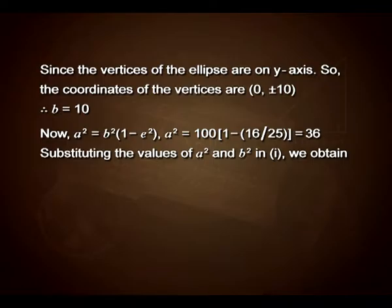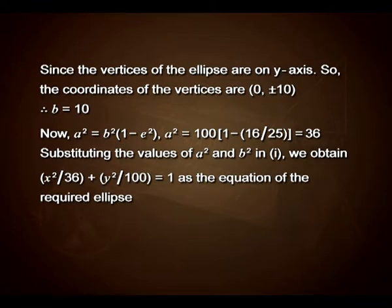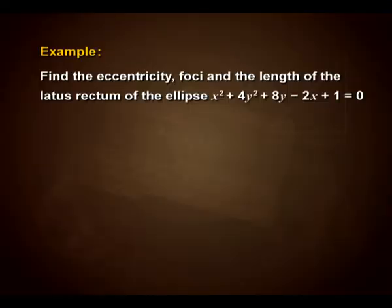Substituting the values of a² and b² in equation 1, we obtain x² upon 36 plus y² upon 100 equals 1 as the equation of the required ellipse. Let us look at one more example. Find the eccentricity, foci and the length of the latus rectum of the ellipse x² plus 4y² plus 8y minus 2x plus 1 equals 0.